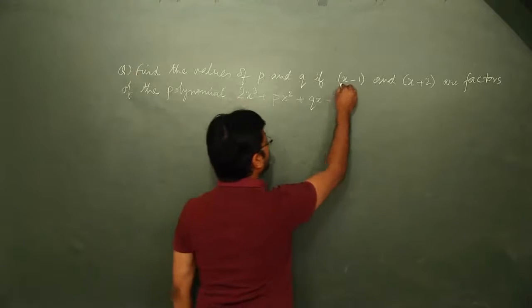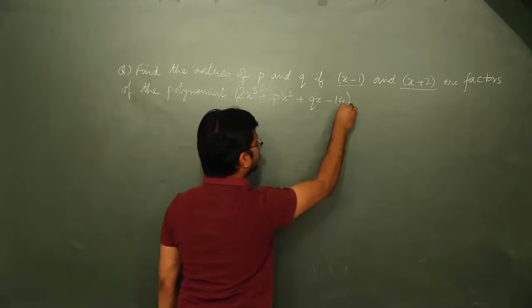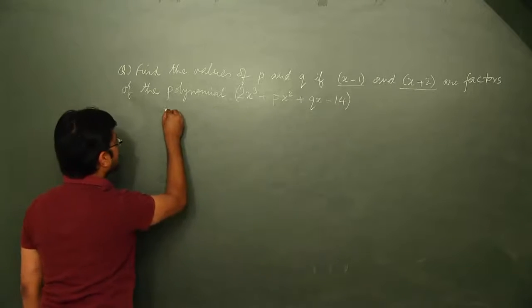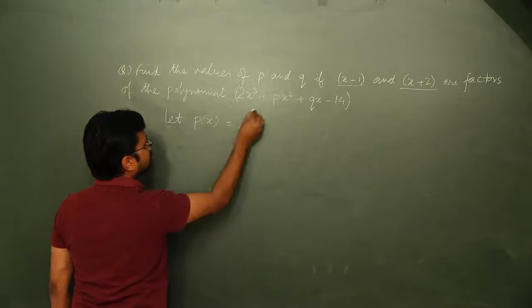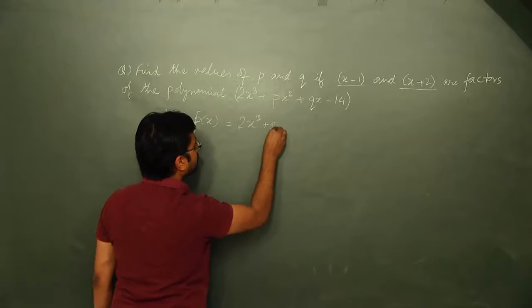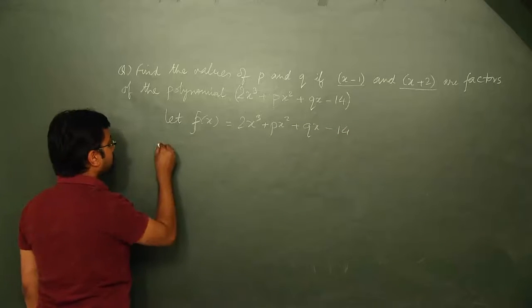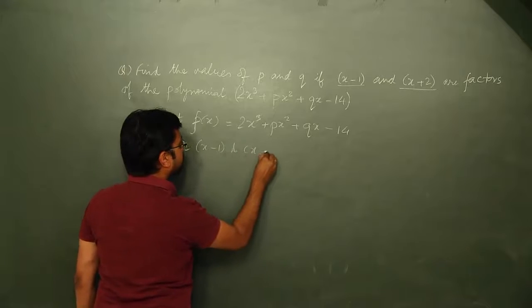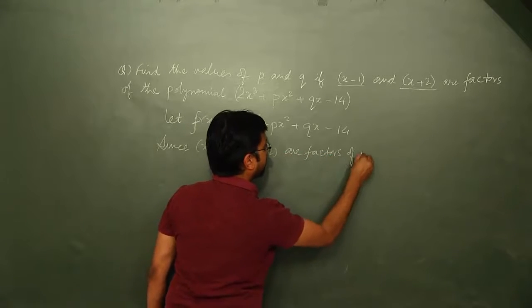Since it is given that these two linear polynomials are factors of this polynomial, from factor theorem, let us assume f(x) equals 2x cubed plus px squared plus qx minus 14, since p and q are already used as coefficients. Now, since x minus 1 and x plus 2 are factors of f(x)...